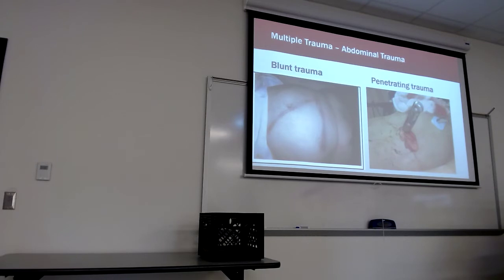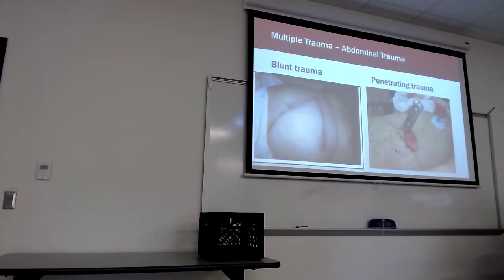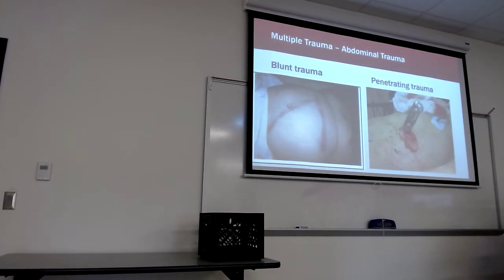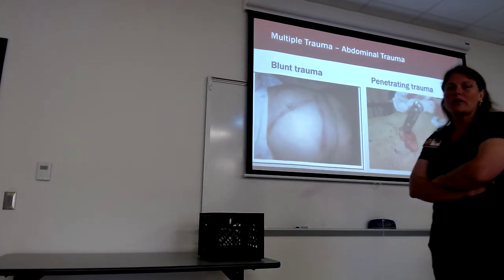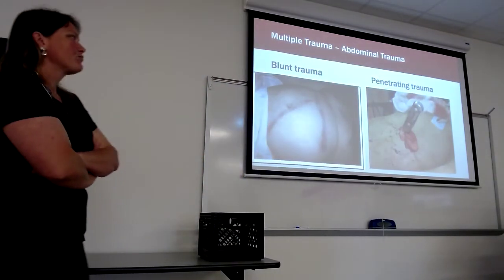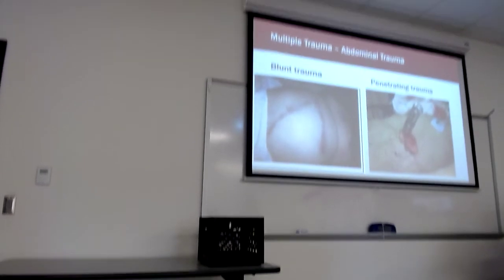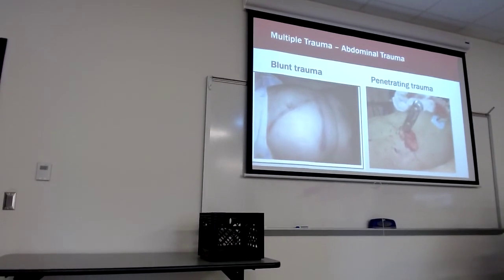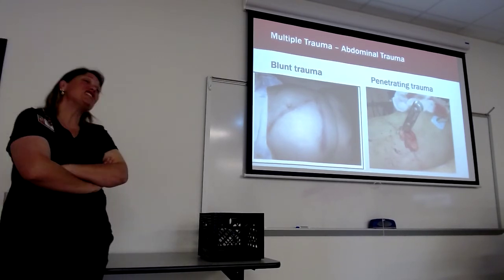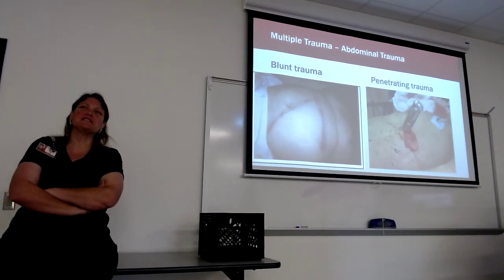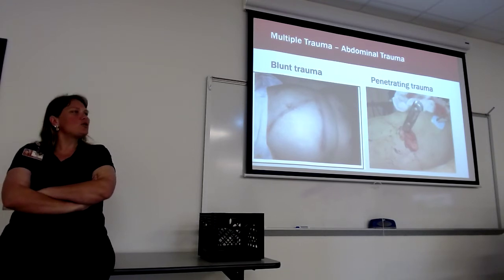For abdominal trauma, we have two types: blunt and penetrating. Blunt traumas typically come from steering wheels, seat belts, contact sports like baseball bats or shoulder pads — essentially any force without a break in the skin. Penetrating trauma involves a break in the integumentary system at the abdomen — typically bullets and knives, but I've seen fence posts, nail gun nails, and once a rock from a jet ski accident.